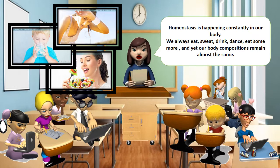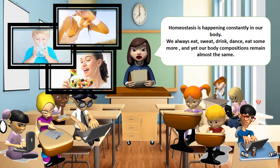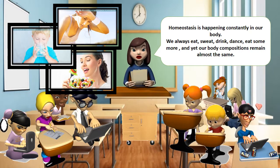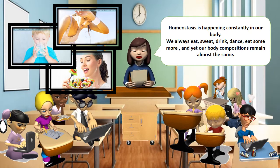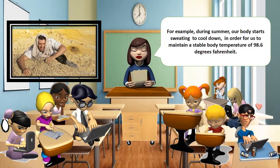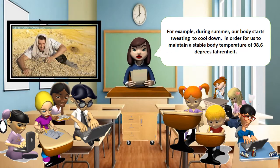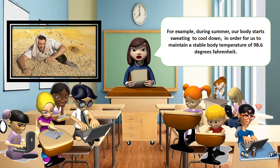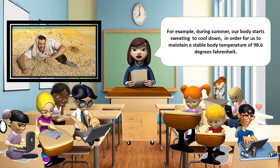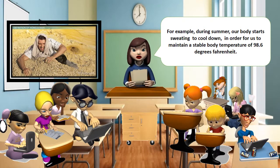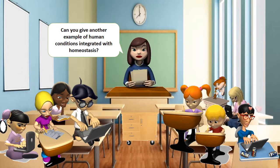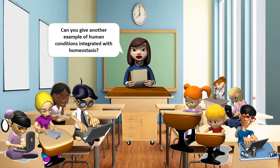Homeostasis is happening constantly in our body. We always eat, sweat, drink, dance, eat some more, and yet our body compositions remain almost the same. For example, during summer, our body starts sweating to cool down the heat from the external environment, in order for us to maintain a stable body temperature of 98.6 degrees Fahrenheit. Can you give another example of human conditions integrated with homeostasis?